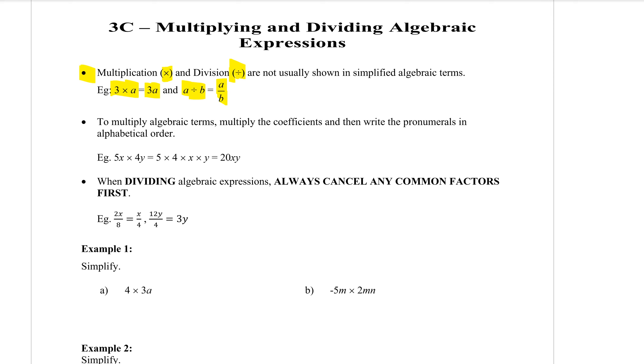To multiply algebraic terms, multiply the coefficients and then write the pronumerals in alphabetical order. So this is the kind of question you'll have here. 5X times 4Y. This is expanded form. You need to multiply the 5 and the 4 to get 20. The letters are different, but that doesn't matter for multiplication. The letters just collect up at the end and usually we put them in alphabetical order. You don't get marked out if they're not in alphabetical order, but answers in textbooks will pretty much always be that way.